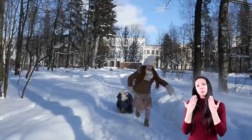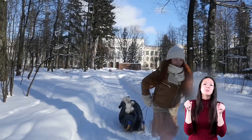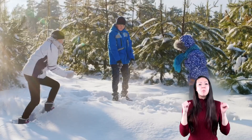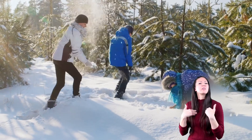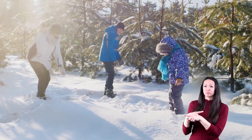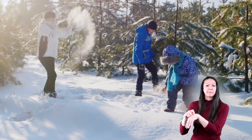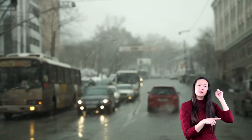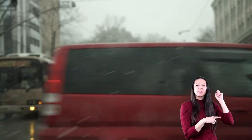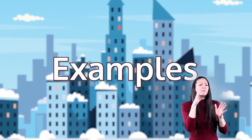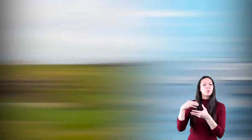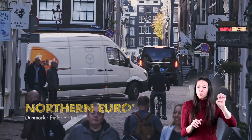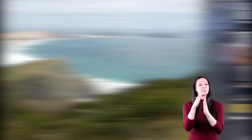In cool climates, the winters are cold and the summers are warm. The winter months have snow and freezing temperatures for short periods of time, and there is less rain in the summer than there is in winter. Examples of cool climates include the British Isles, Northern Europe, and New Zealand.